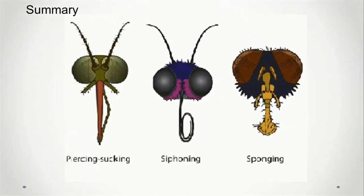Here is a summary of the different sucking mouth parts. The first is called piercing and sucking mouth parts, common to mosquitoes, tsetse flies, aphids, and others — they pierce the body of their host then suck the fluid out. The second is siphoning mouth parts, common to butterflies, moths, and wasps — they use their proboscis to enter the flower and get nectar. The last is the spongy mouth parts, common to houseflies — they can feed on liquid food and even solid food by releasing digestive enzymes to break it down, then suck it in.